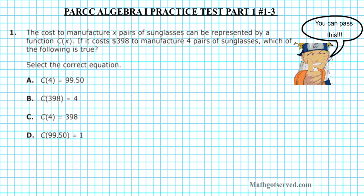Problem 1 says: the cost to manufacture x pairs of sunglasses can be represented by a function c of x. If it costs $398 to manufacture 4 pairs of sunglasses, which of the following is true? This problem is assessing your understanding of the notation of a function.